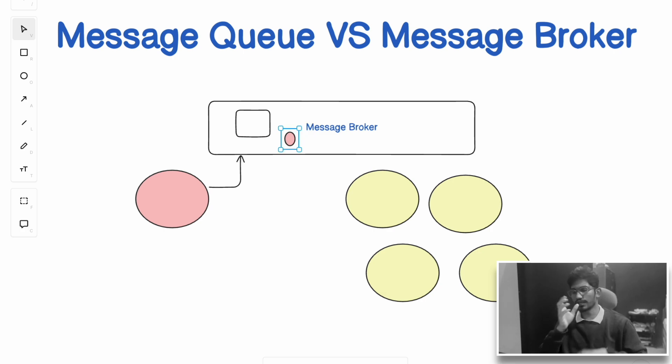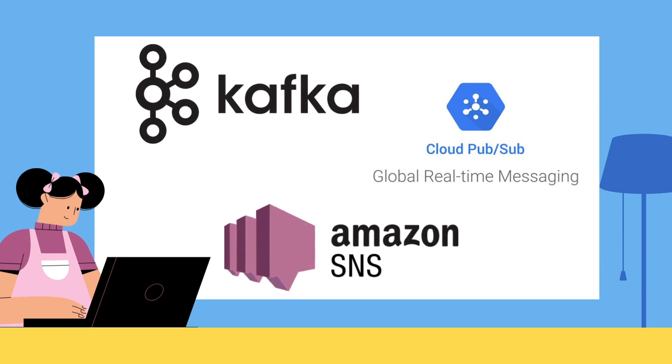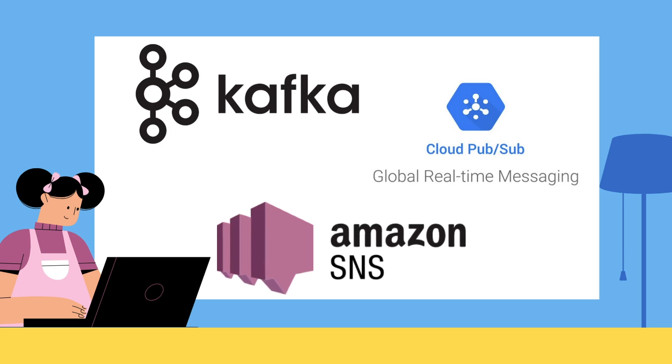Message brokers are used for event-driven architectures where multiple systems need to react to the same event. For example, if a company's stock moves up or down, that information needs to be sent to mobile devices, news websites, trading websites, and trading bots — many consumers for a single piece of information. Each subscriber can act on the message independently. Popular technologies supporting pub-sub include Apache Kafka, Google Pub/Sub, and AWS SNS.